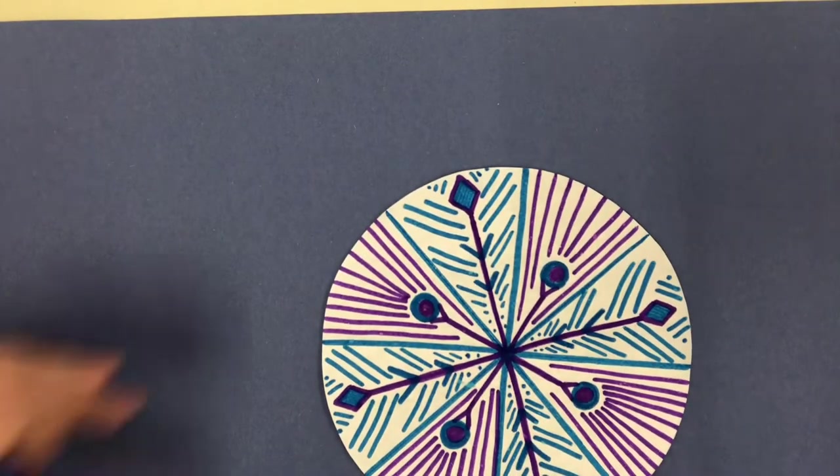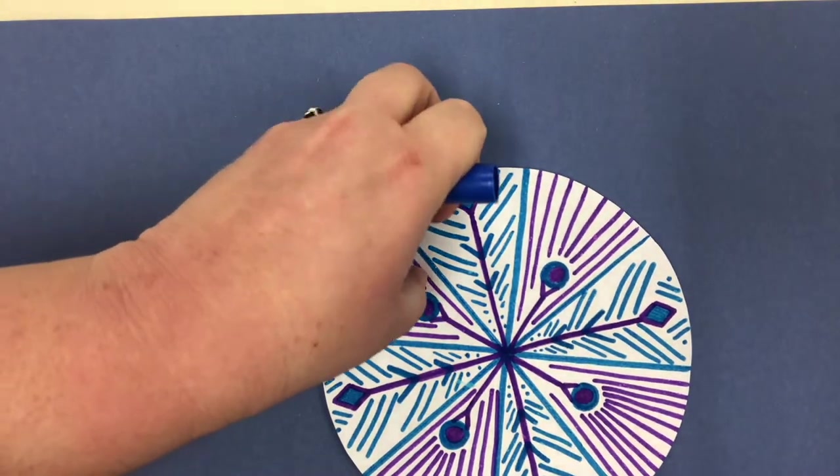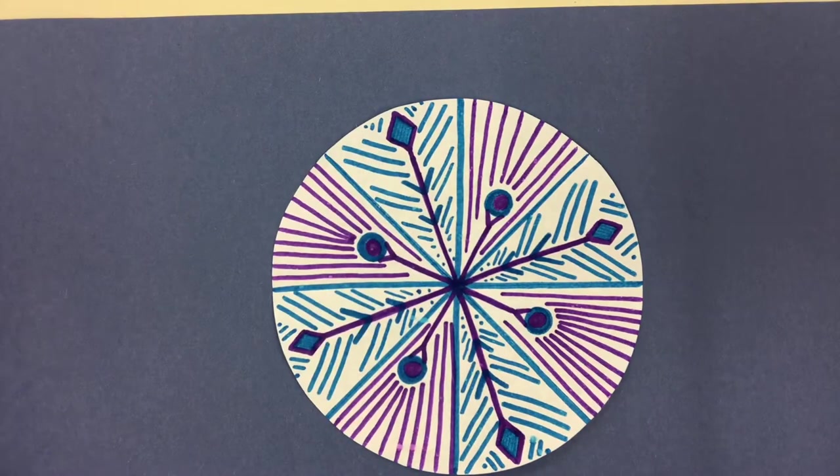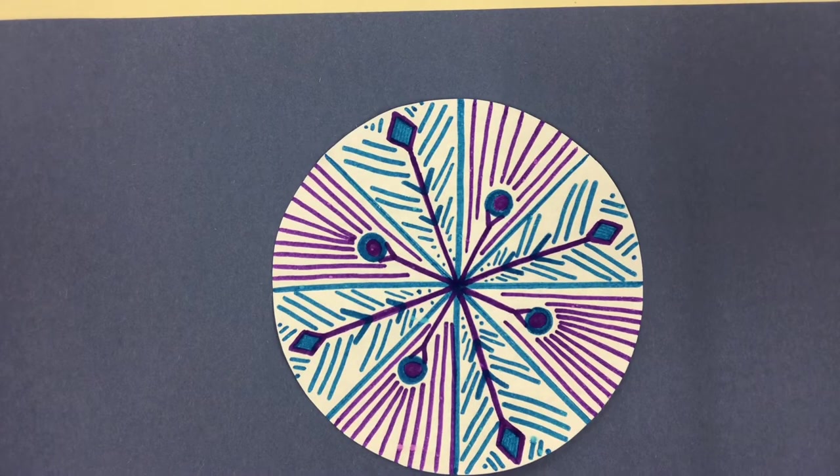So that's what we're going to be working with today. You can see in our snowflakes how everything looks like it's coming in towards the middle. All our lines and shapes are going in towards that middle point for like a starburst effect in the snowflake.